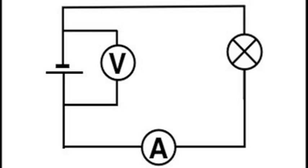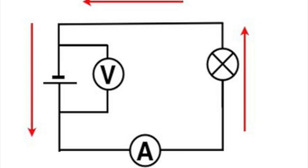In this example here, chemical energy in the cell is converted to electrical energy, which passes around the circuit, being converted in turn to heat and light in the bulb.